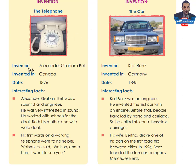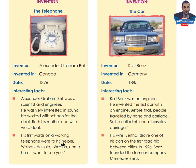Invention A — The Telephone. Inventor: Alexander Graham Bell. Invented in Canada. Date: 1876. Interesting facts: Alexander Graham Bell was a scientist and engineer. He was very interested in sound. He worked with schools for the deaf; both his mother and wife were deaf. His first words on a working telephone were to his helper Watson — he said: 'Watson, come here, I want to see you.'